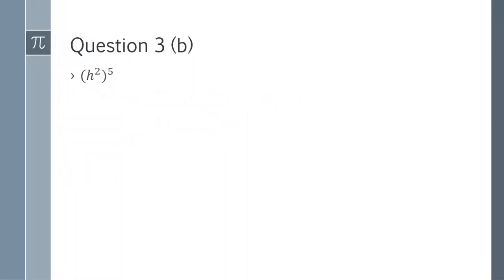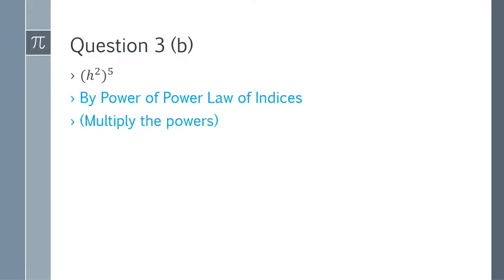Question 3b: (h^2)^5. We use the same power of power law and multiply the powers. h^(2×5) = h^10. That is the answer for question 3b.